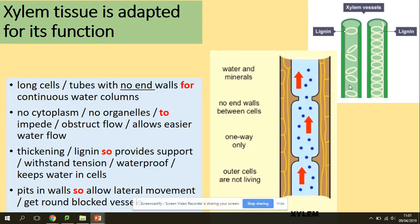Let's look at the adaptations of xylem. Xylem cells have long tubes with no end walls, forming continuous water columns. They have no cytoplasm or organelles, allowing easy water flow. They contain lignin, which provides support and withstands tension, is waterproof, and keeps water in the cells. They also have pits in the walls to allow lateral movement of water.